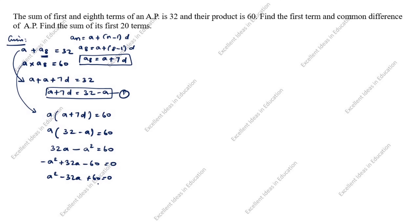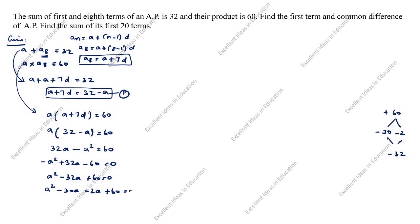Now we solve this by splitting the middle term. We need two numbers whose product is 60 and sum is 32. We find that 30 times 2 is 60, and 30 plus 2 is 32. So we use minus 30 and minus 2: minus 30 times minus 2 is plus 60, and minus 30 minus 2 is minus 32. We write: A squared minus 30A minus 2A plus 60 = 0.